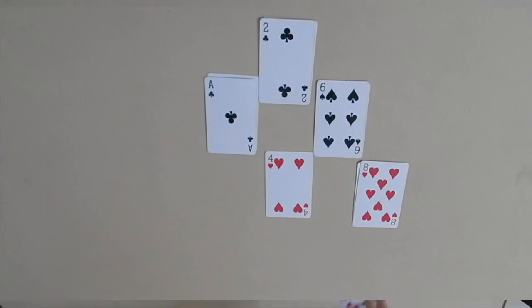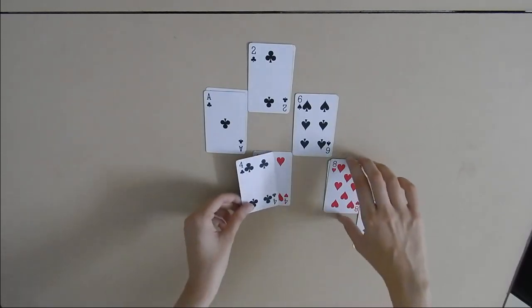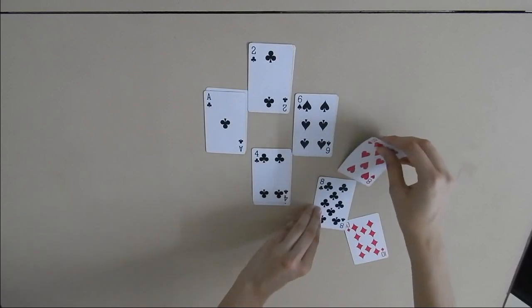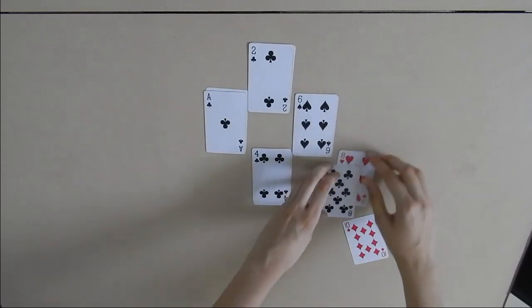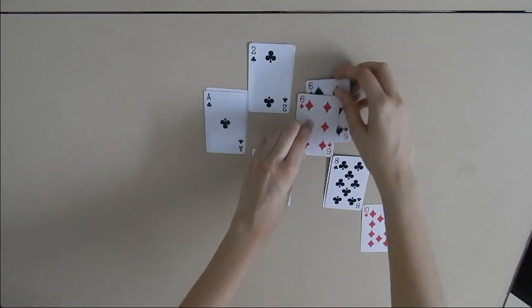Now moving on to insertion of 10, two consecutive red nodes 8 and 10 occur. As new node 10's uncle is red, we perform a recolor operation. By recoloring 6 and 8, we again get a tree which satisfies the property of a red-black tree.